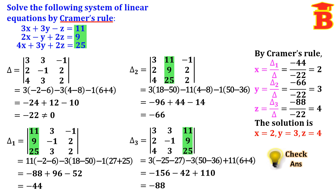We can check the answer by taking the first equation and substituting the values: 3 into x value 2 is 6, plus 3 into y value 3 is 9, minus z value 4. So 6 plus 9 is 15, and 15 minus 4 is 11, which equals the right hand side 11. So 11 equals 11, the equation is satisfied, therefore the answer is correct.